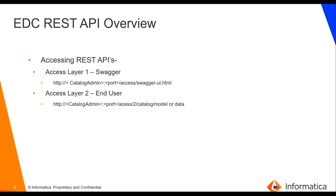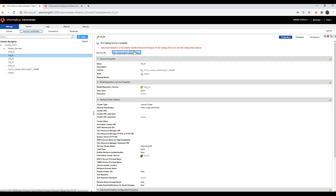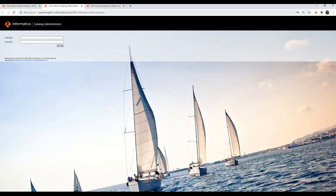To access layer 2, which is designed for direct use by the end users, you can type in the name of the Catalog admin followed by the port number, and then type in slash access slash 2, followed by slash model or data, as these are the exposed concepts. Now let's move on to trying out some basic REST API calls. First, let's try out access layer 1 or Swagger.